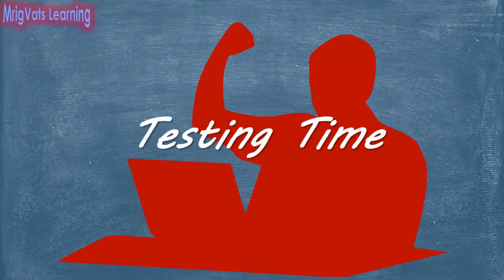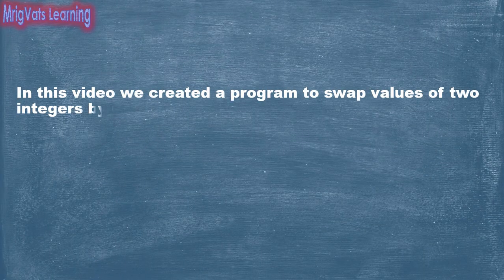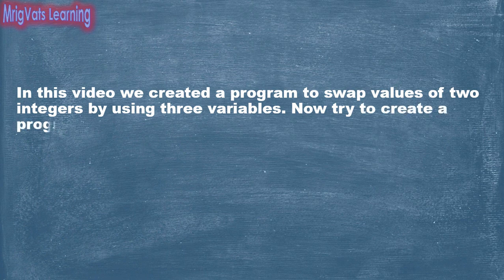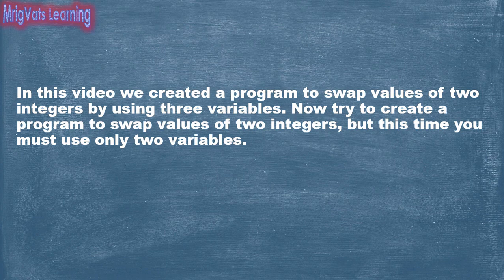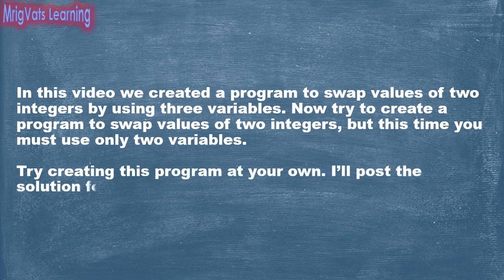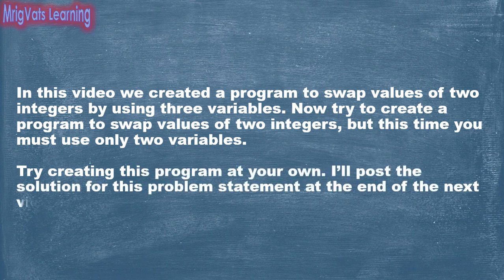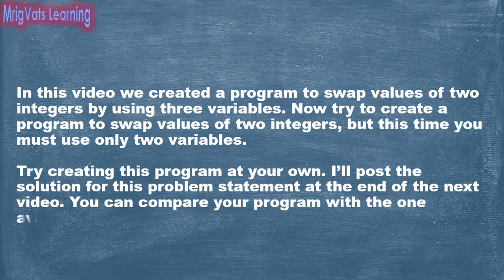Now let's complete an exercise on data types and variables. In this video, we created a program to swap values of two integers using three variables. Create a program to swap values of two integers, but this time you must use only two variables. Try creating this program on your own. I will post the solution to this problem at the end of the next video, and you can compare your program with the one available there.